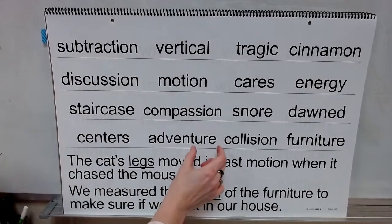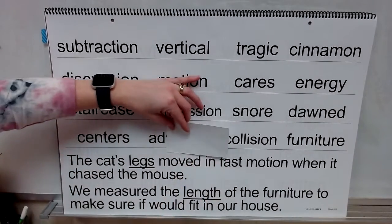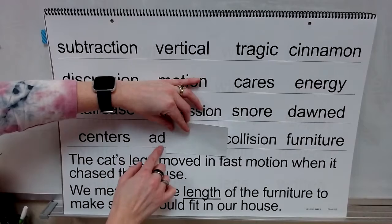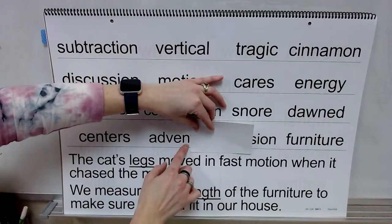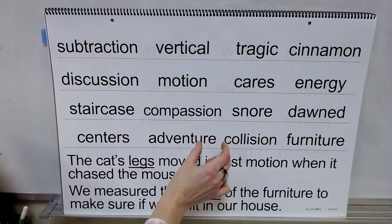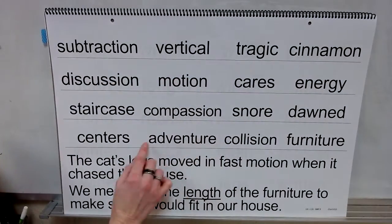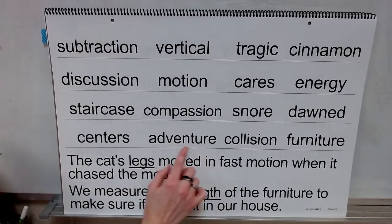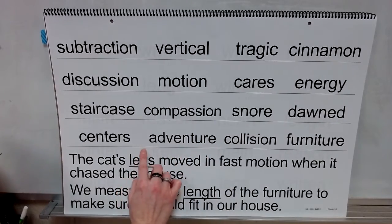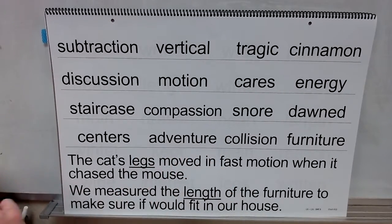There's your final syllable. Syllable: 'ad'. Syllable: 'fen'. Syllable: 'chur'. Blend it. What word? Adventure.